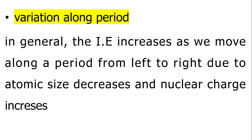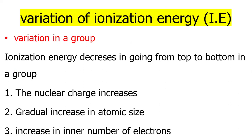In general, ionic energy increases as we move along the period from left to right, due to atomic size decreasing and nuclear charge increasing. That is why ionic energy also increases in a period, and ionic energy decreases in going from top to bottom due to increase in atomic size and inner number of electrons. That is the shielding effect. That is why the ionic energy decreases.